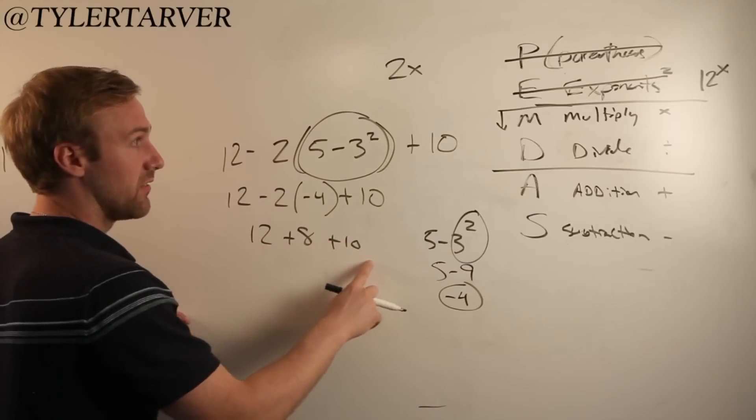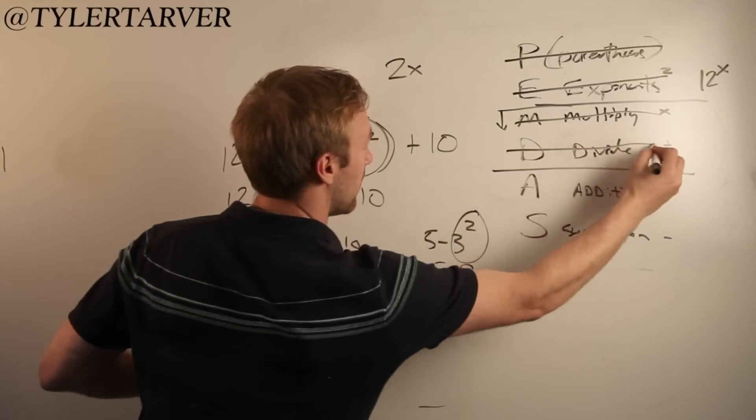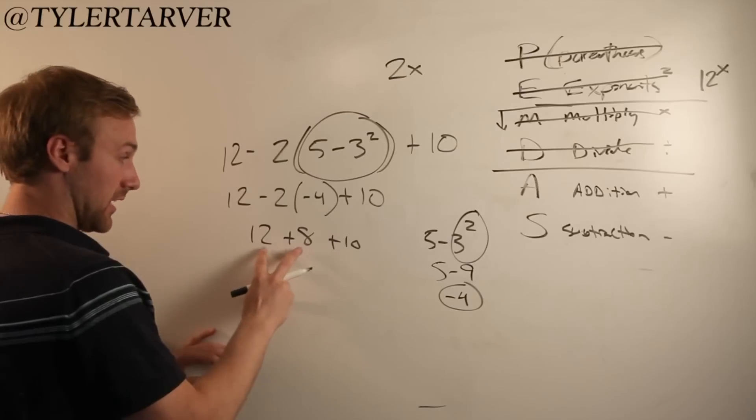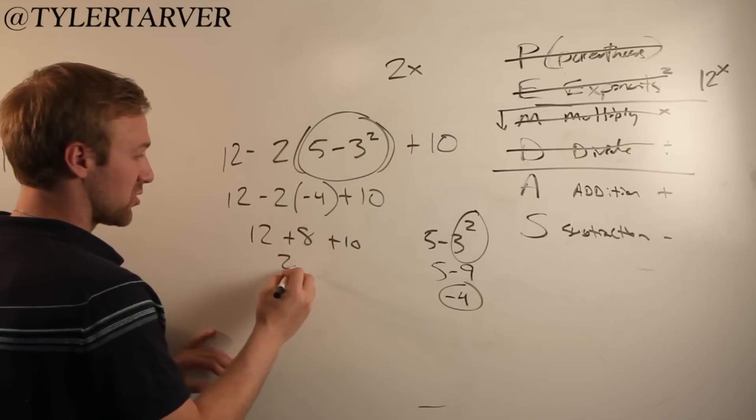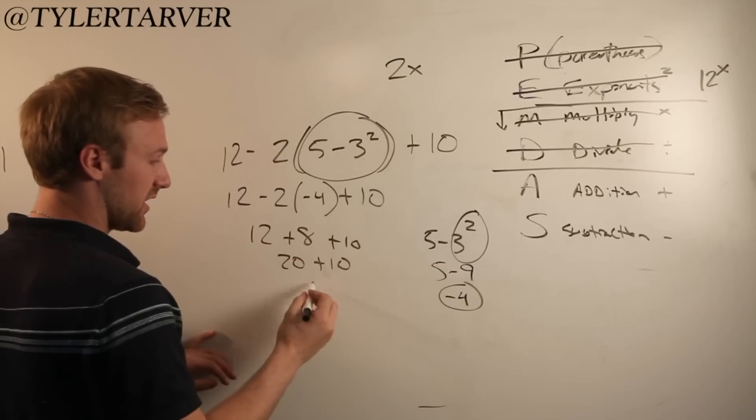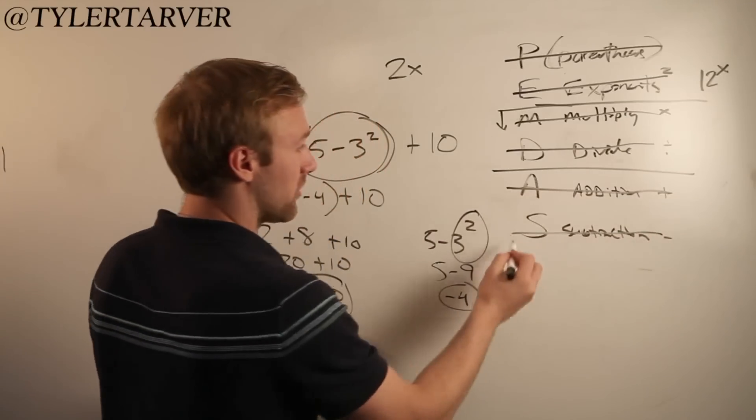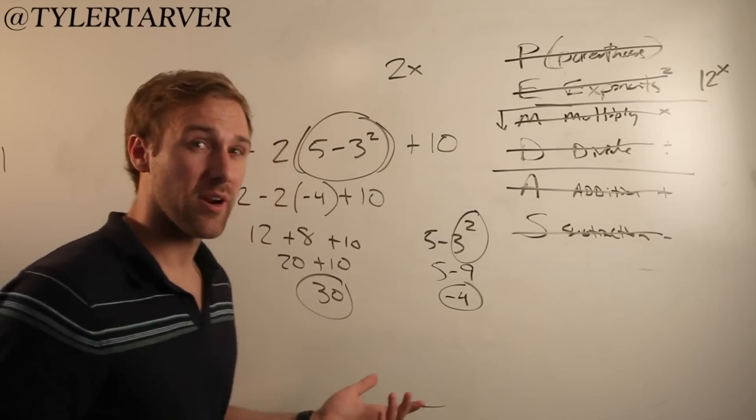Is there anything else to multiply? No. Is there anything else to divide? No. Is there anything to add? Yep. 12 plus 8 is 20. And then we just keep going from left to right. 20 plus 10 is 30. Is there anything else left? I'm sorry subtraction, you don't get included. And that's the order of operations.